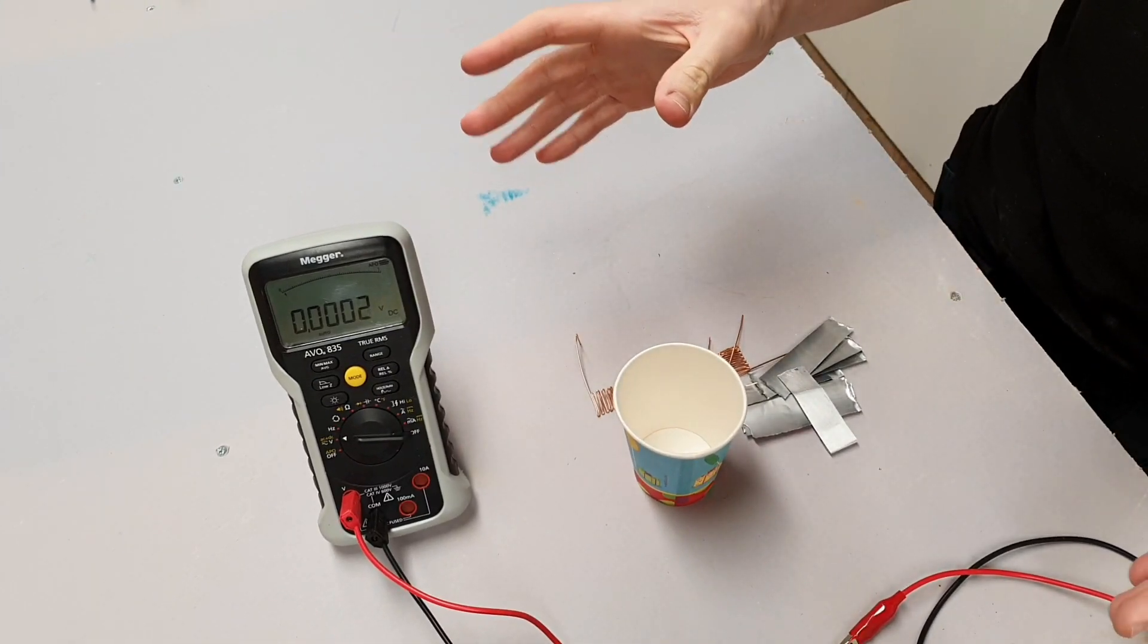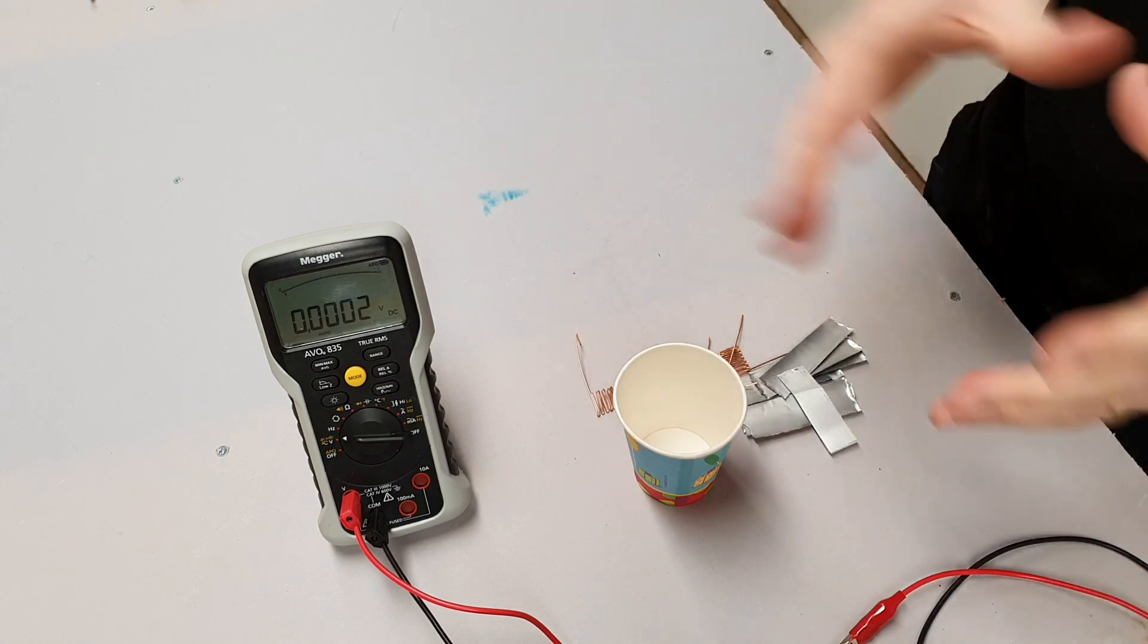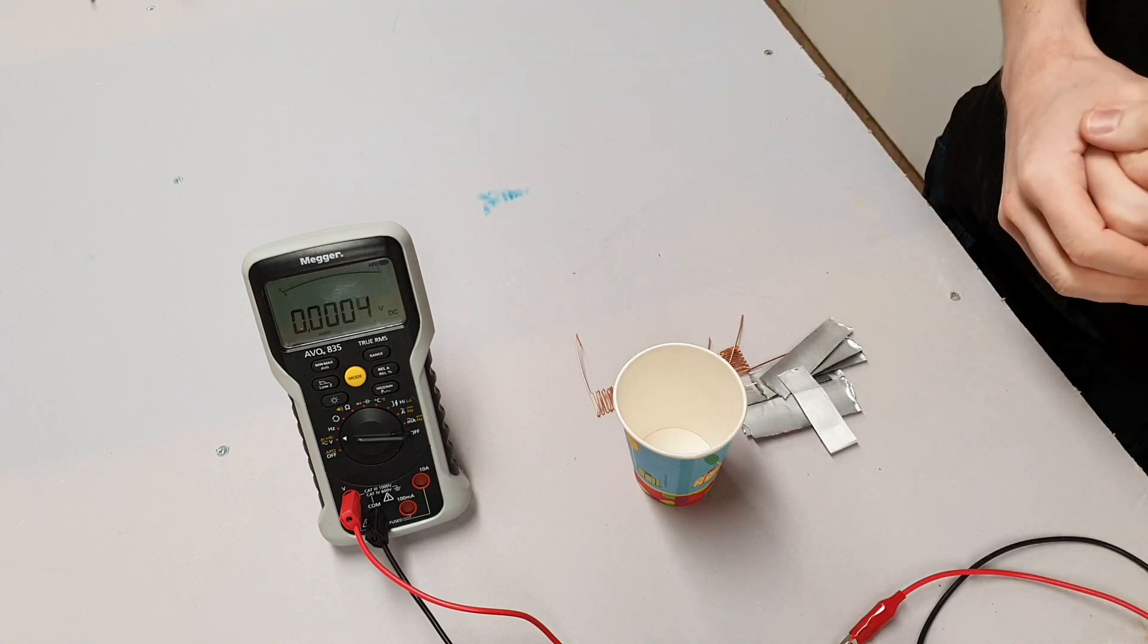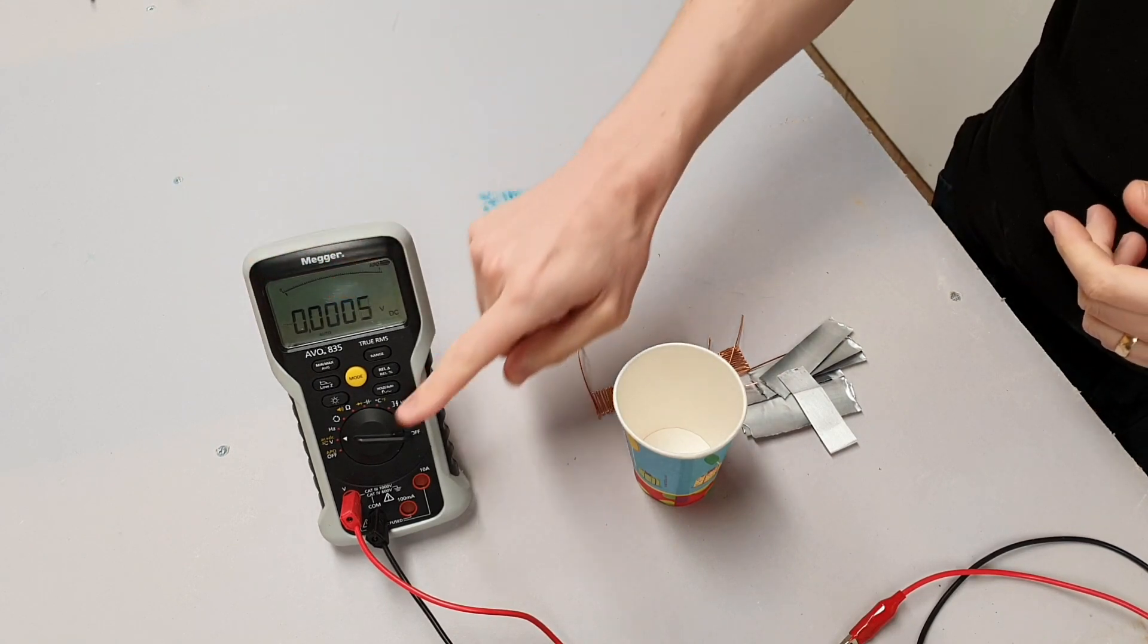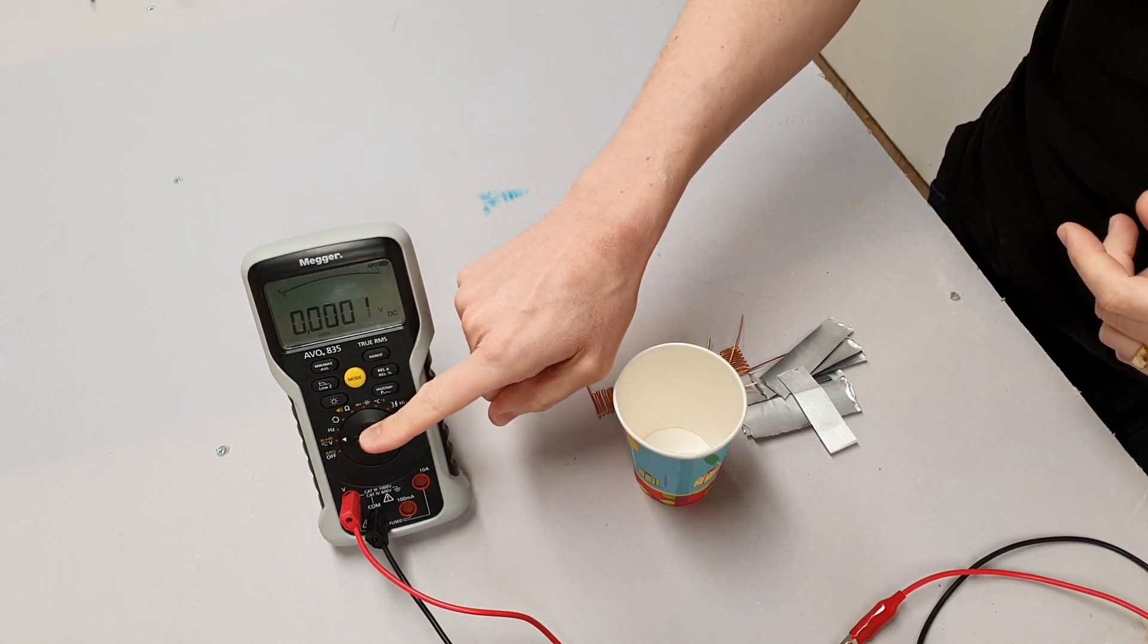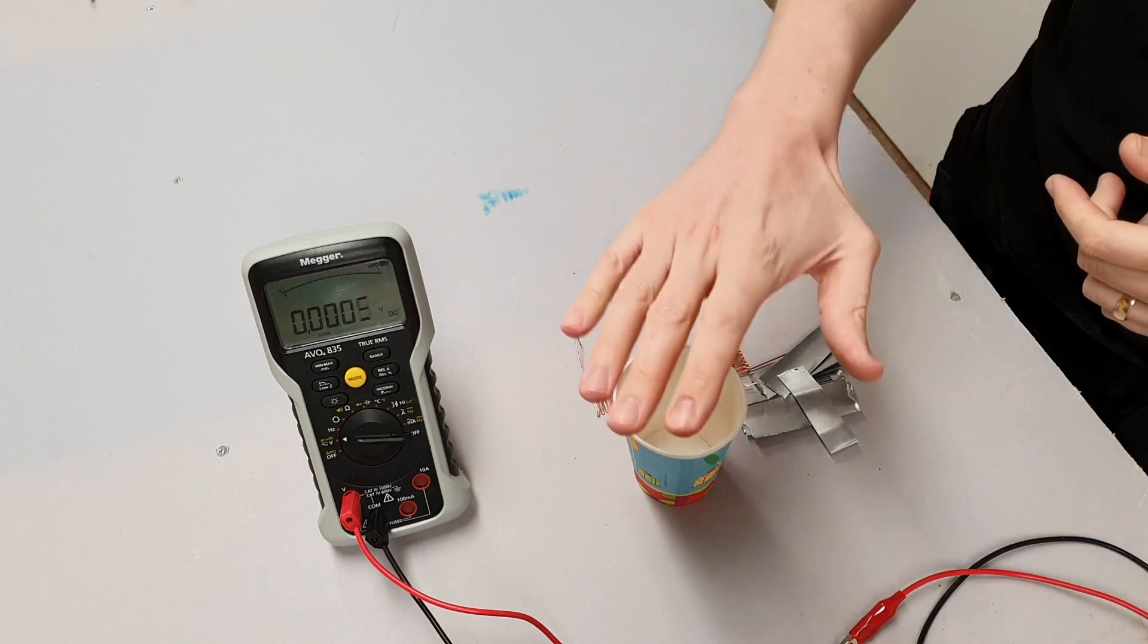Okay, so the first effect that we're going to demonstrate is the chemical effect. We've got everything set up here that we need. We've got our Megger multimeter which has been set to measure DC voltage.